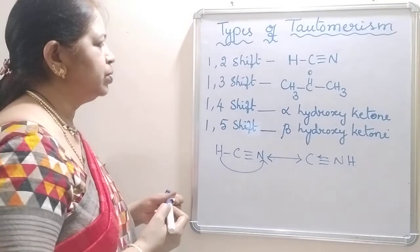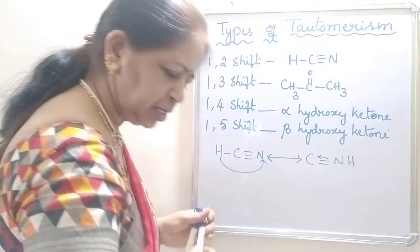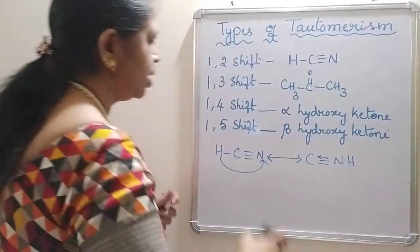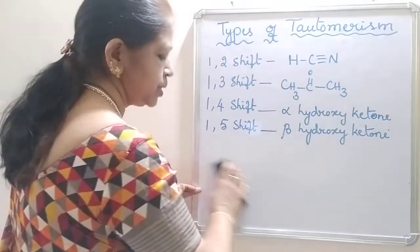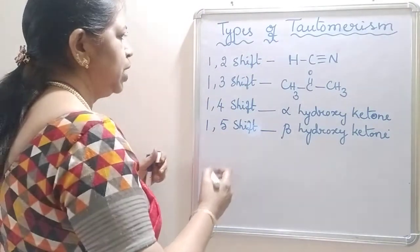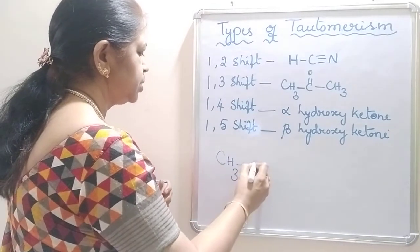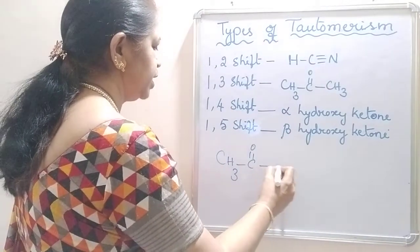Now, 1-3 shift. 1-3 shift is also known as keto-enol tautomerism, which is mostly seen in ketones and also aldehydes. It is CH3-C double bond O-CH3.